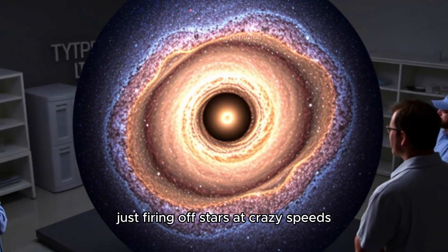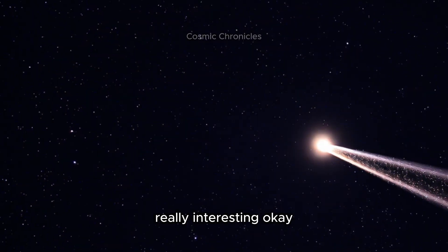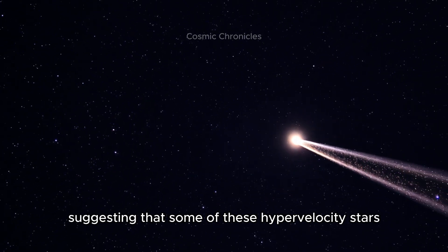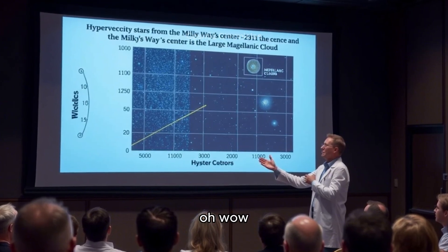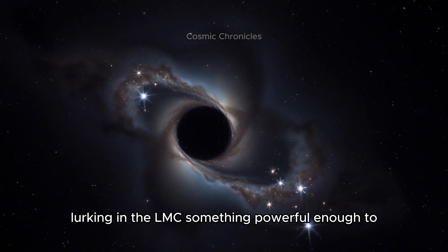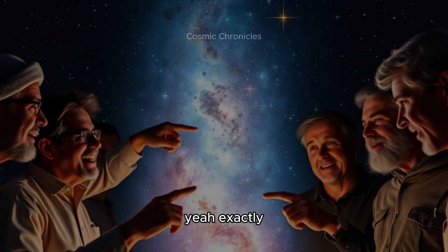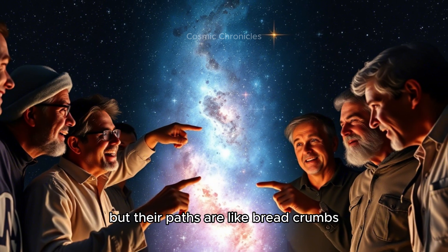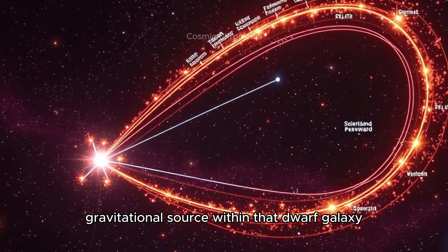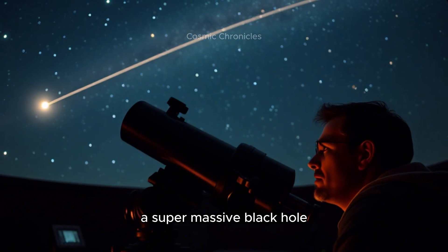For many years, the assumption was that pretty much all the hypervelocity stars that we've observed originated from the center of our galaxy, the Milky Way, where our own supermassive black hole Sagittarius A* lives. A supermassive black hole basically acts like a cosmic cannon, just firing off stars at crazy speeds. But here's where things get really interesting. There's this new evidence suggesting that some of these hypervelocity stars might have actually been ejected from the LMC. That implies there's something seriously massive lurking in the LMC, something powerful enough to kick these stars out at those speeds.